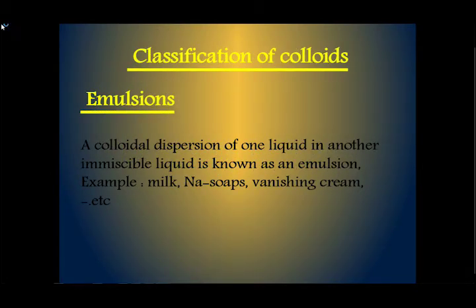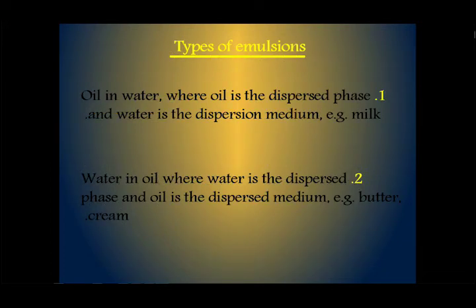Classification of colloids — emulsion: a colloidal dispersion of one liquid in another immiscible liquid is known as an emulsion, for example milk. Types of emulsion include oil-in-water, where oil is the dispersed phase and water is the dispersion medium as in milk, and water-in-oil, where water is the dispersed phase and oil is the dispersion medium as in butter and cream.